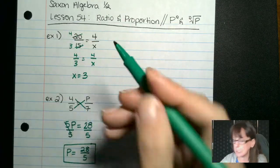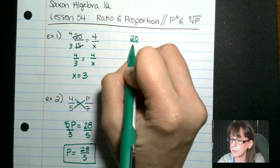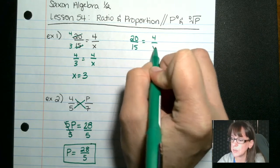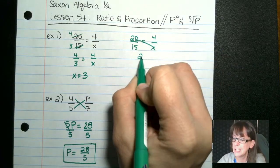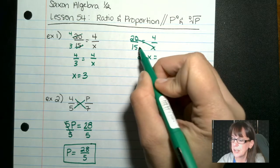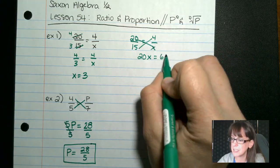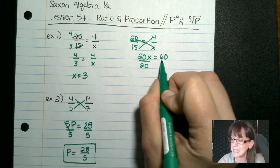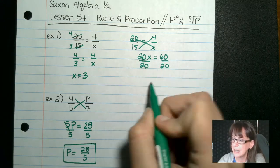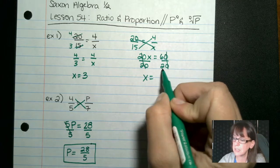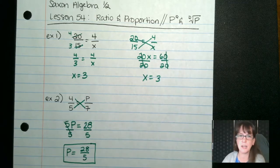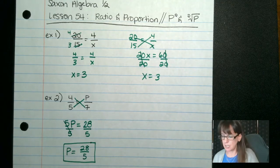So we could have done the same thing up here when we had 20 over 15 equals 4 over x. We could have cross-multiplied to say 20x equals 15 times 4 would be 30 times 2, which is 60. Divide both sides by 20. 6 divided by 2 gives us 3. Do you see you end up with the answer the same way?